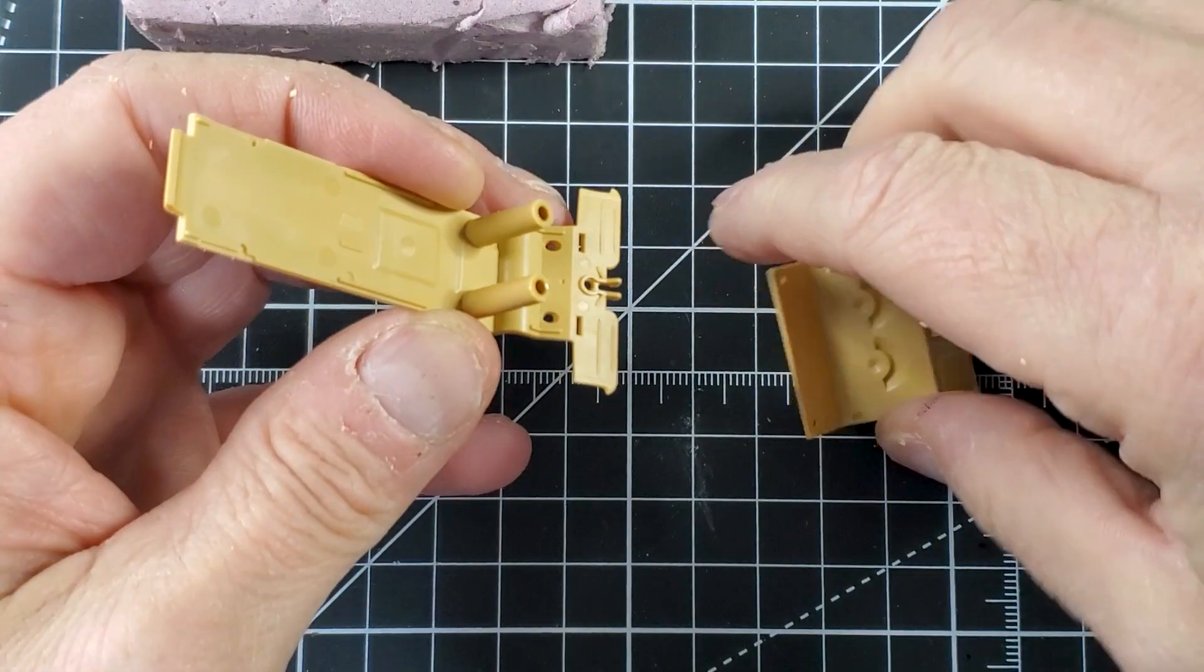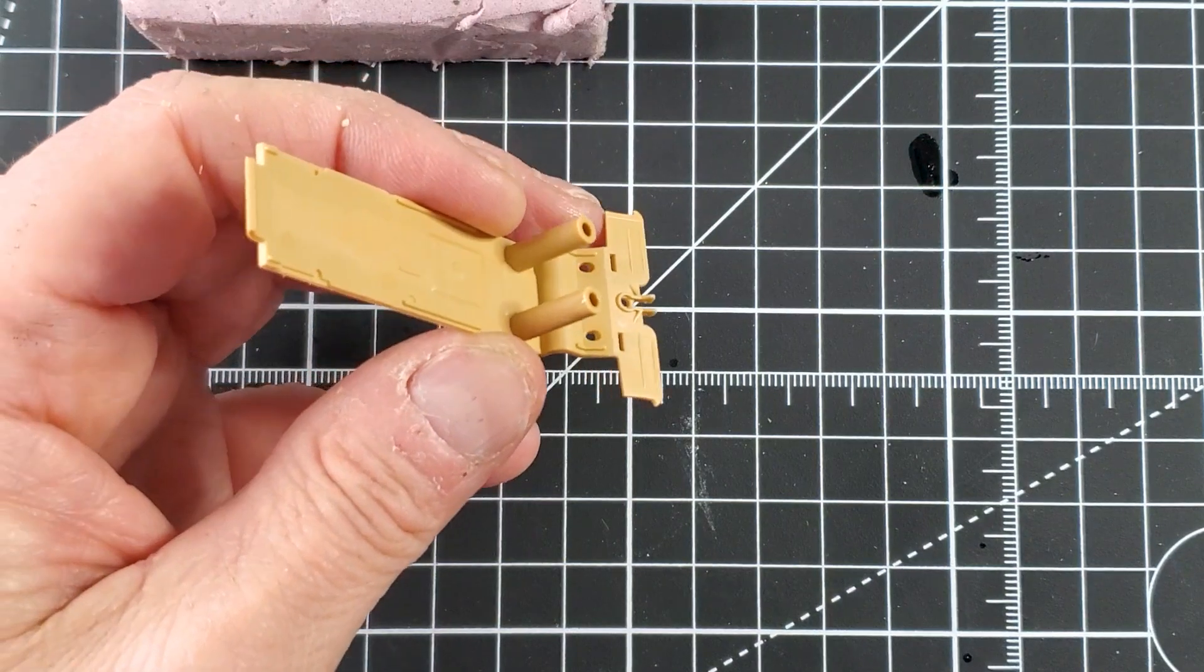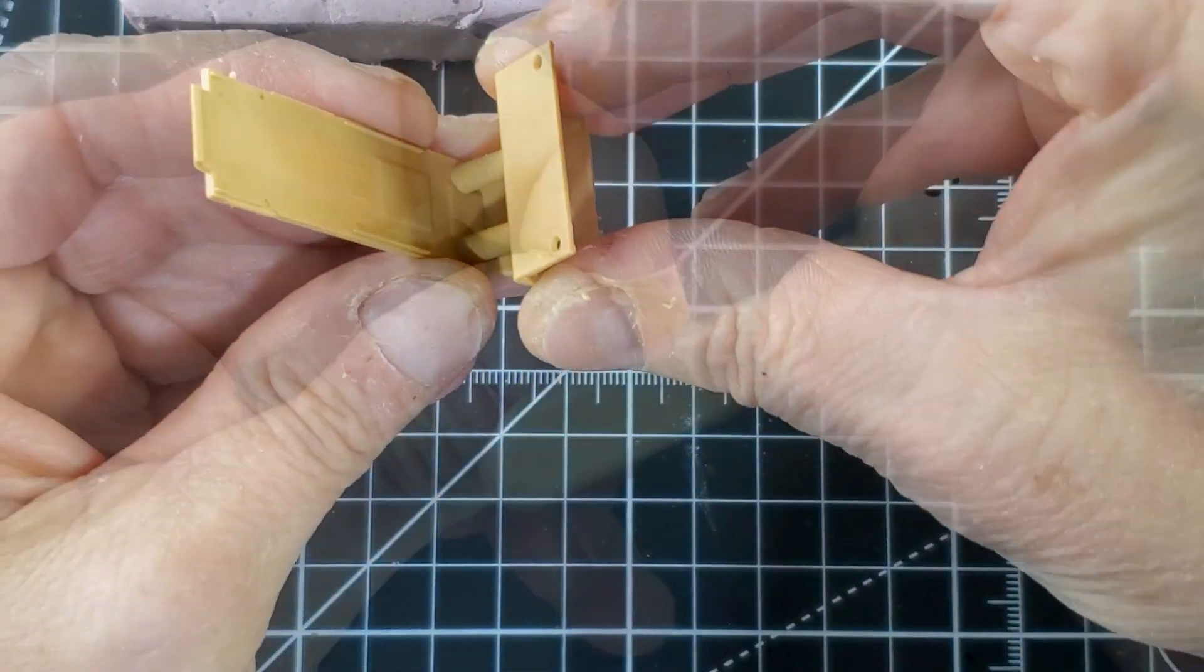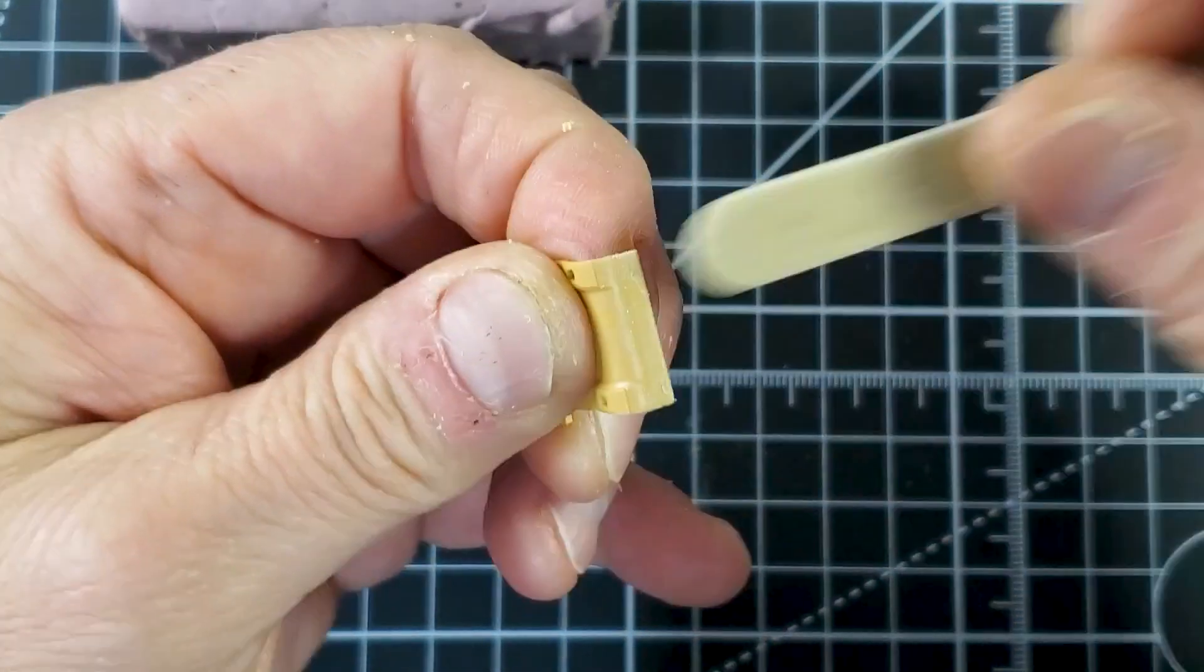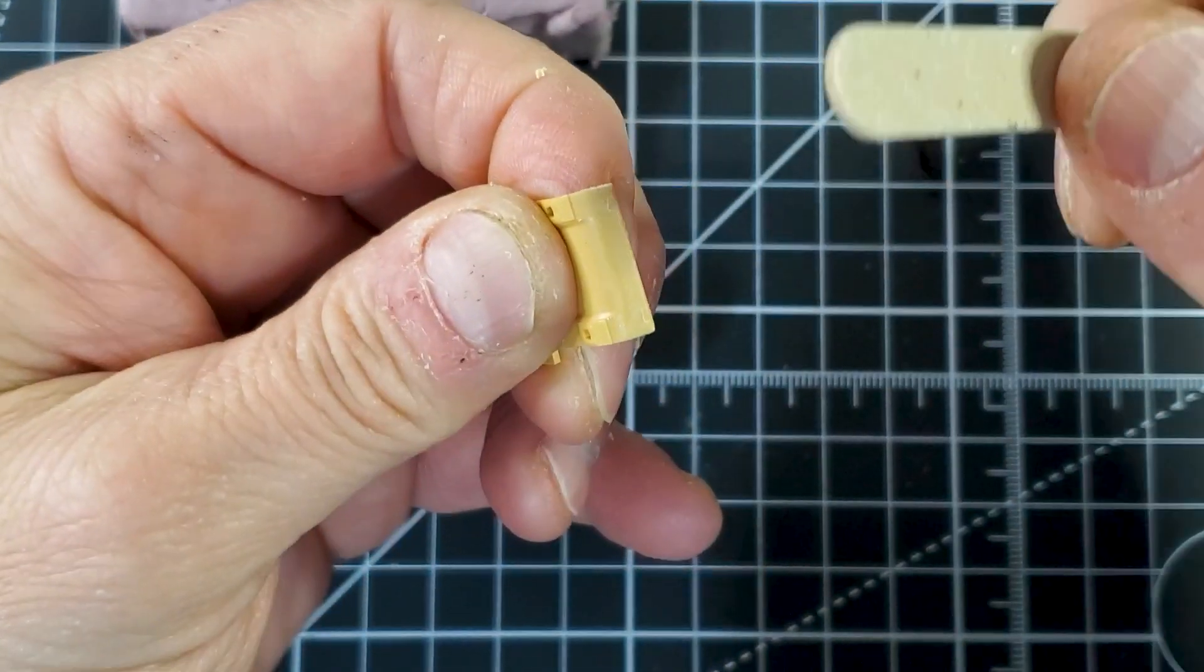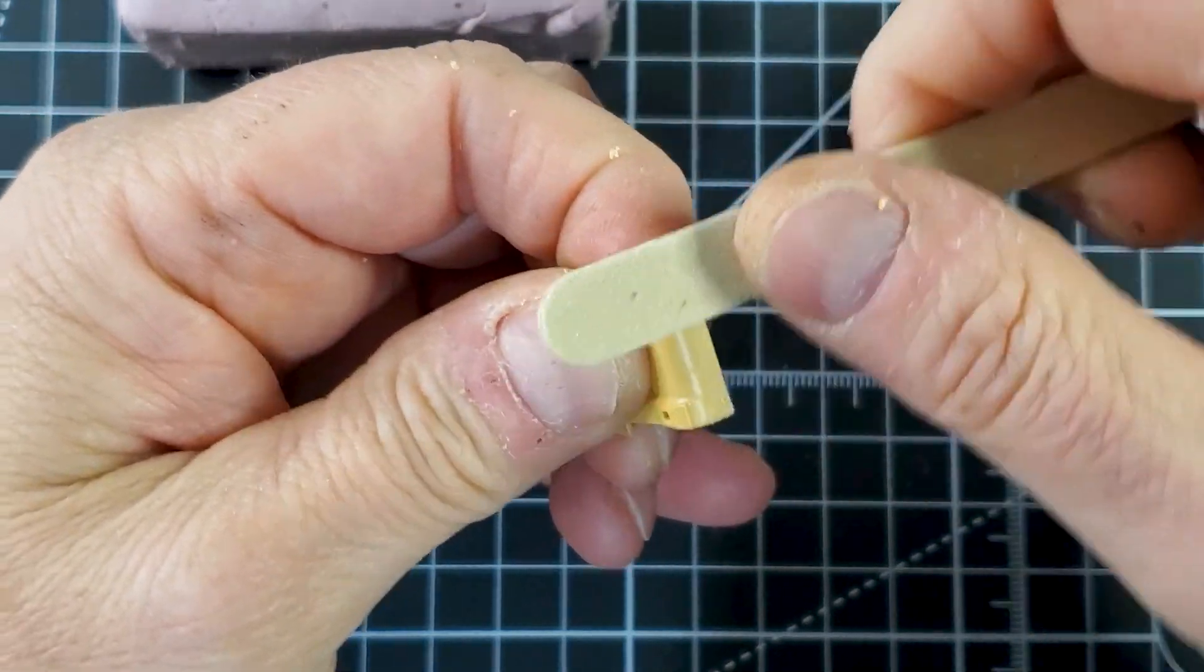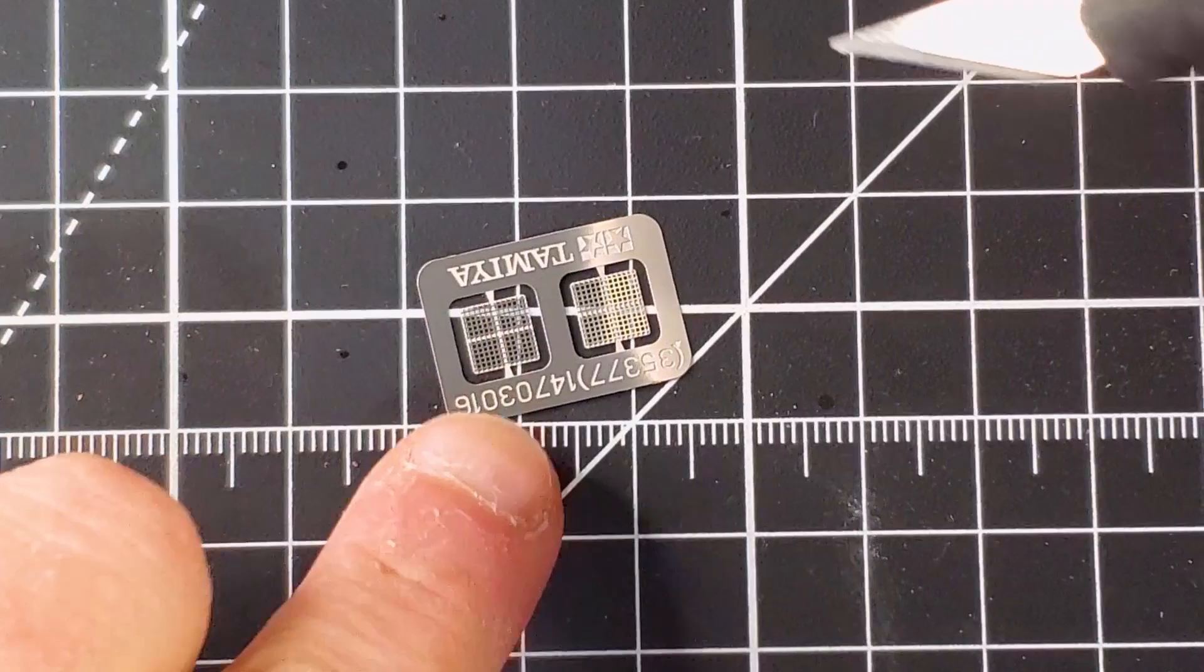The good thing about this kit is it comes with three different figures and the figures are beautifully sculpted like the new Tamiya kits. This one is a reprint of an old kit, so it's kind of a new version of an old version. I'm not sure it's the right way of saying it but you know what I mean.